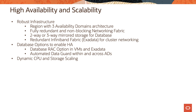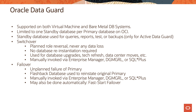OCI DB systems also have dynamic CPU scaling for bare metal shapes and storage scaling for VM DB systems. Oracle Data Guard is supported on both virtual machine and bare metal DB systems, limited to one standby database per primary database on OCI. If the customer has a license for Active Data Guard or deploys the Oracle Enterprise Extreme Performance package, they can use the standby database for queries, reporting, running tests, or backing up the database from the standby.